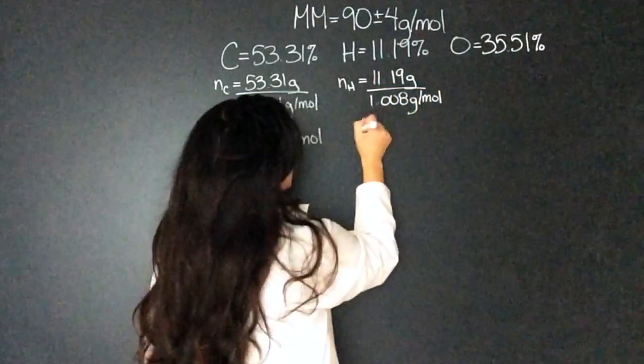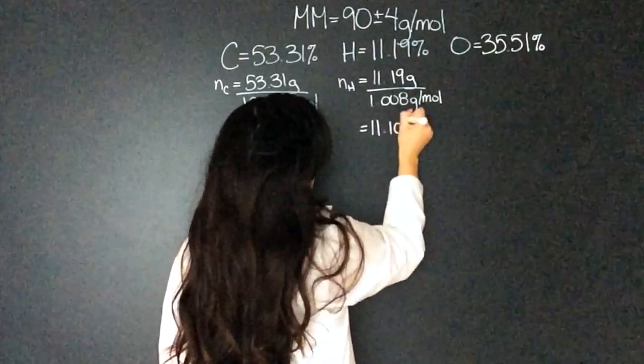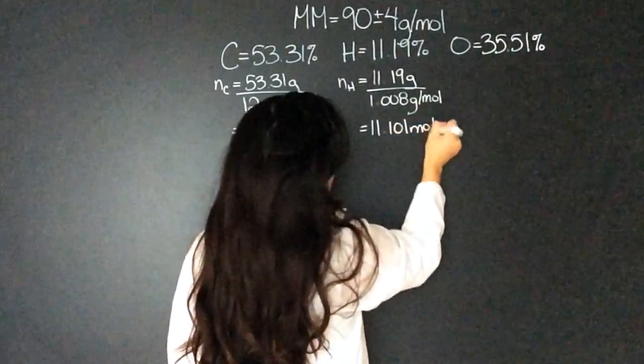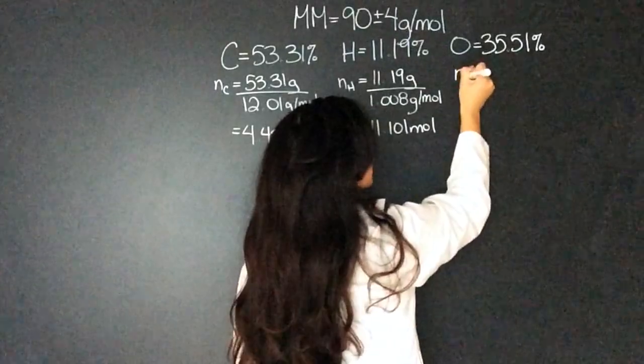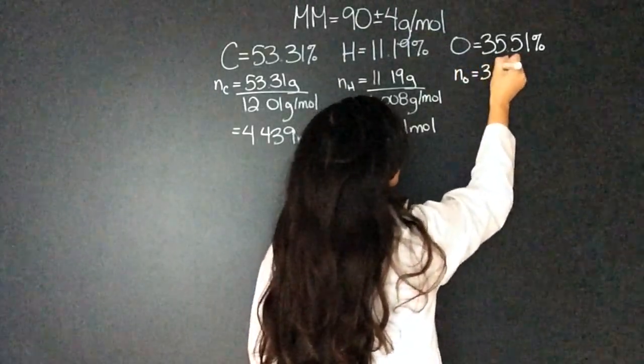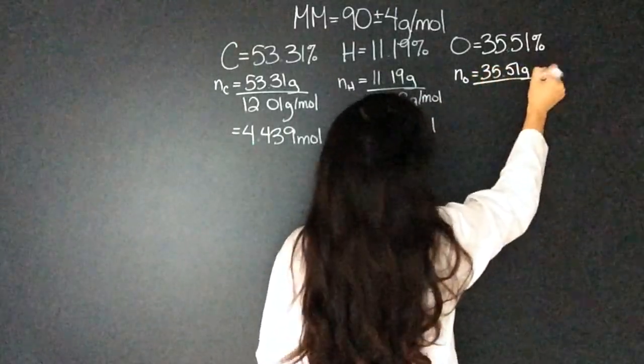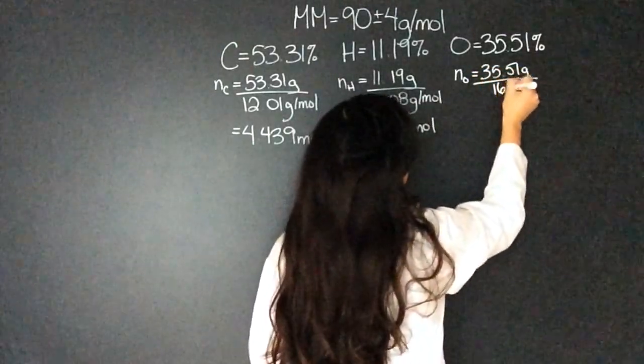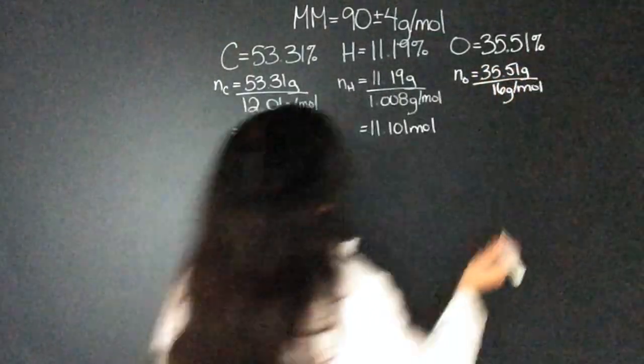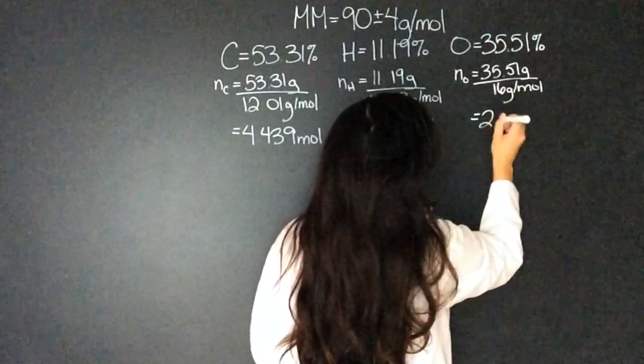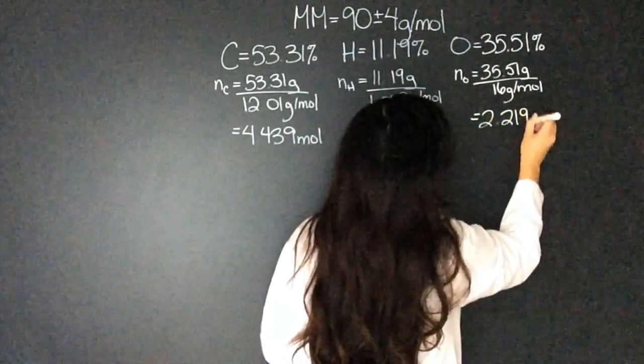That equals 11.101 mole. And then oxygen. The moles of oxygen is going to equal 35.51 grams divided by 16 grams per mole. That equals 2.219 mole.